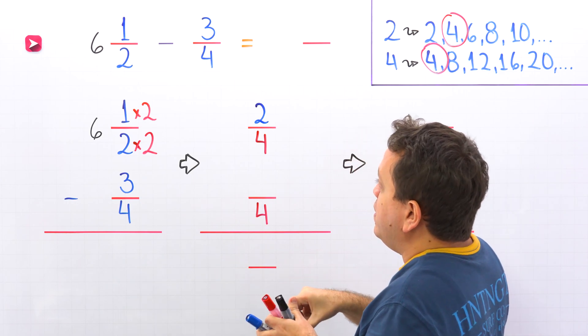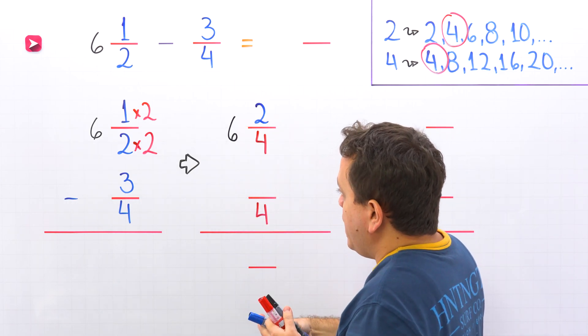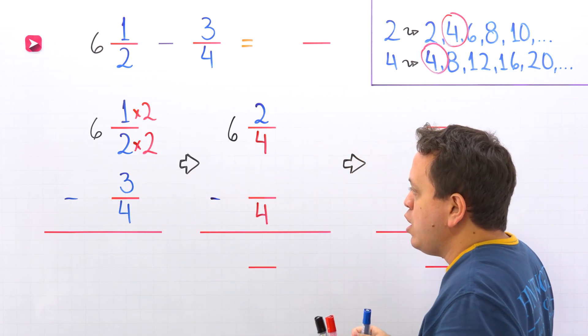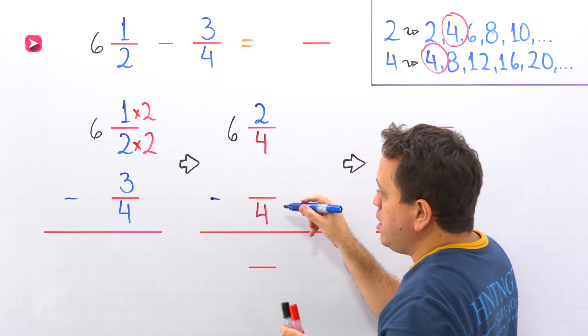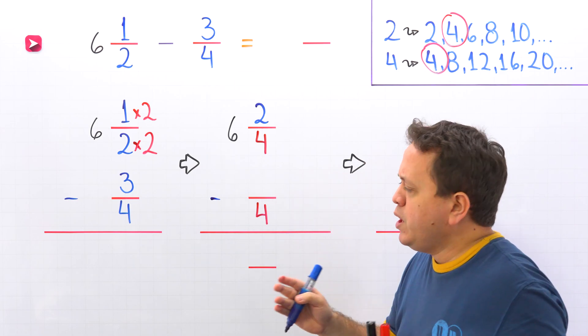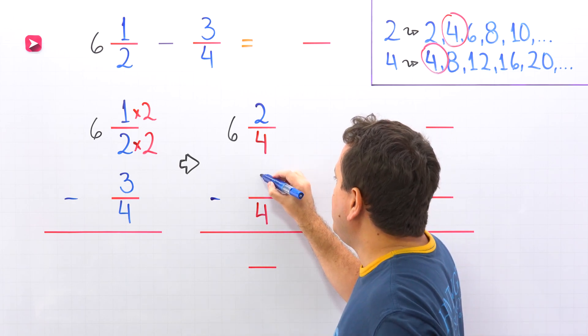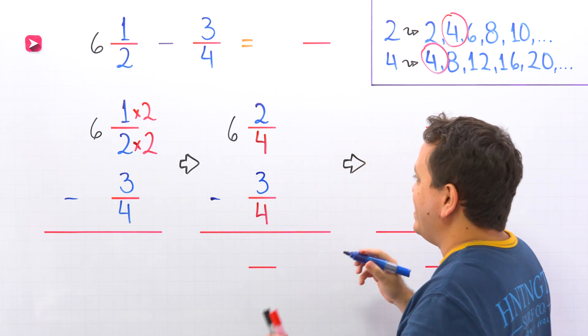Then we have the whole number 6. Then comes the minus sign. And let's continue with the fraction 3/4. We need an equivalent fraction with a denominator of 4. Hold on. This fraction already has a denominator of 4, so we don't need to make any changes. We just put the same fraction 3/4. Nice.